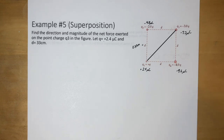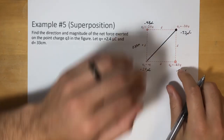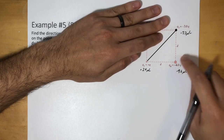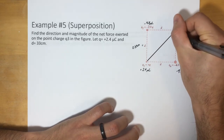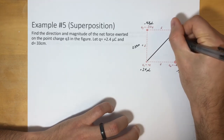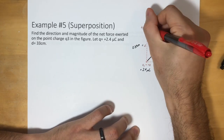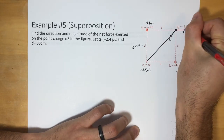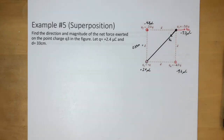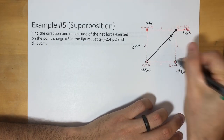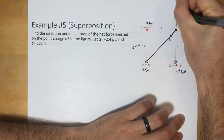We're focusing on the charge q3. Looking at each pair: q3 is negative and q1 is positive, so F_E1 is attractive — pointing toward q1. q3 is negative and q2 is negative, so F_E2 is repulsive — pointing away from q2. q3 is negative and q4 is negative, so F_E3 is repulsive — pointing away from q4.